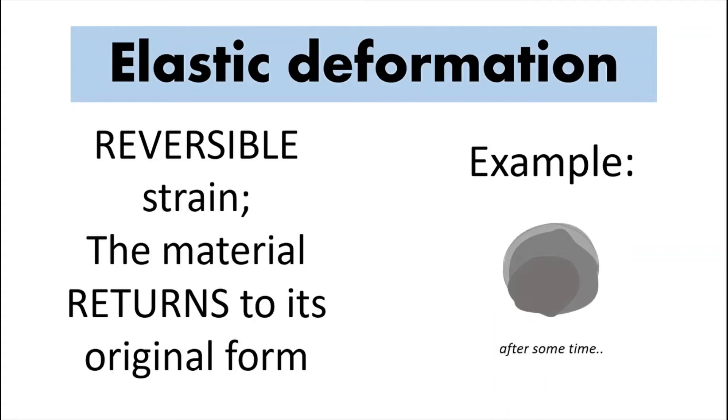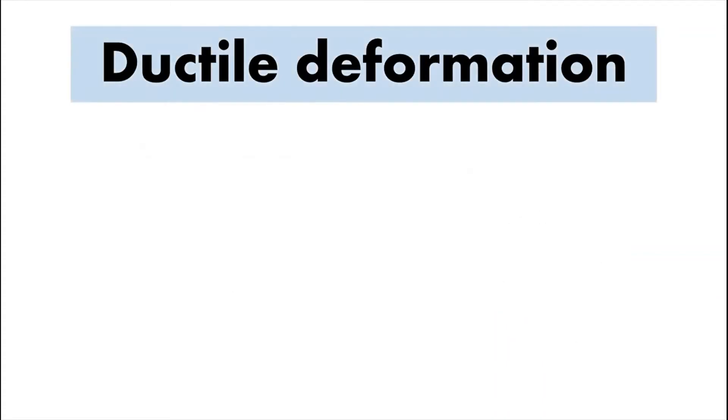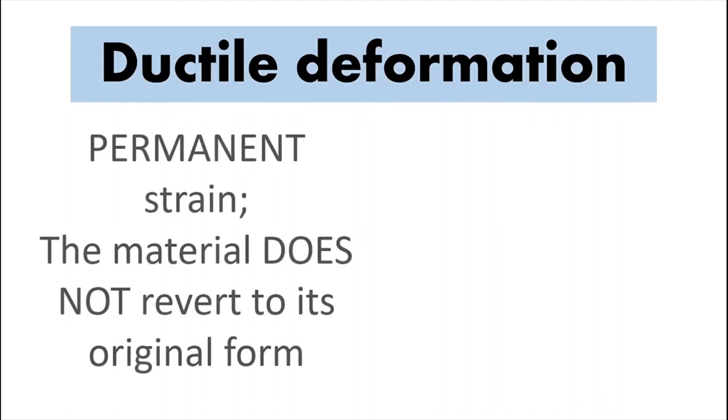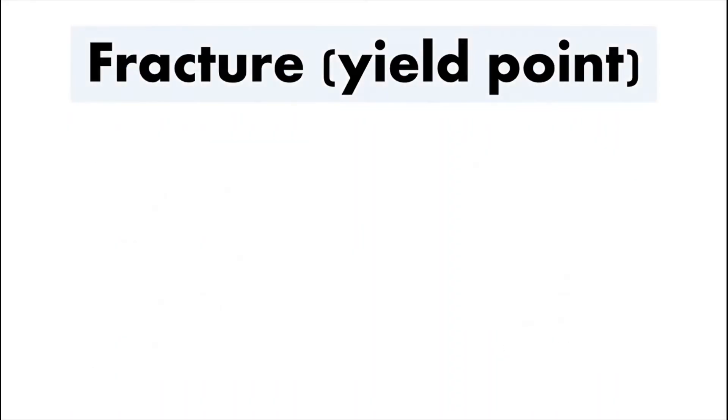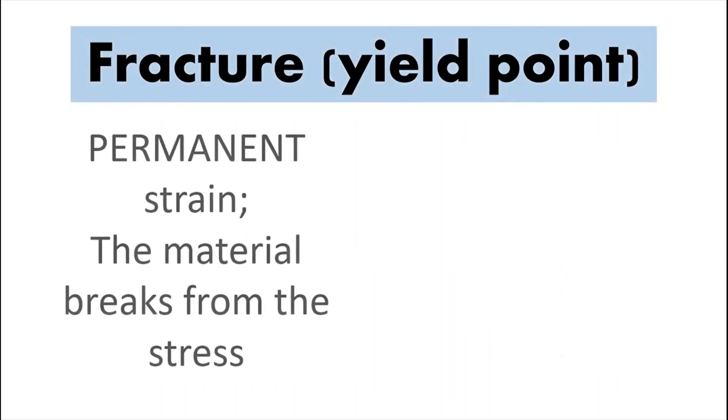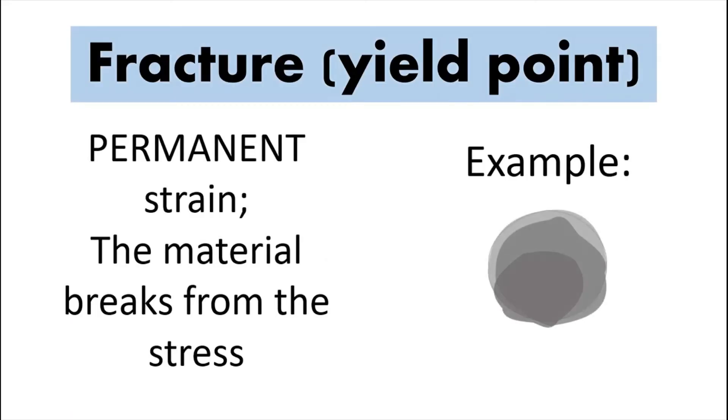The second stage is ductile deformation. This occurs when enough stress is applied to a material that the changes in its shape are permanent. The last stage is fracture or yield point, when the irreversible strain is evident via a break in the material.